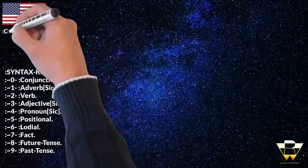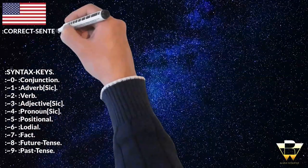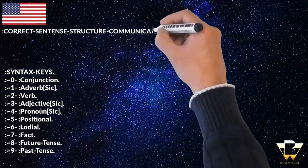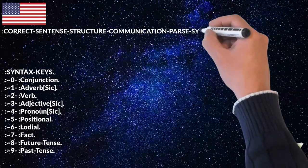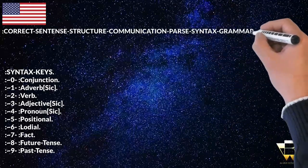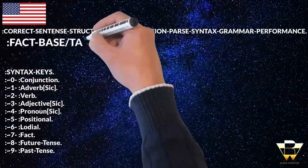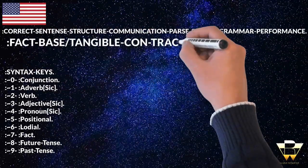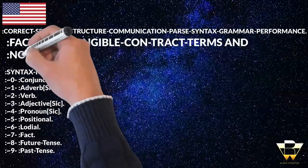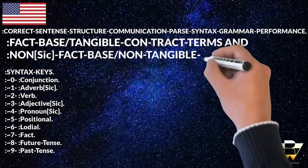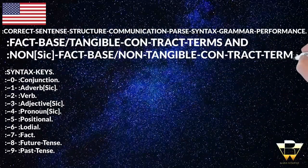In this video, I'm going to continue on with another example of how to tell the difference between a fact-based term and a non-fact-based term — i.e., a tangible contract term and a non-tangible contract term.